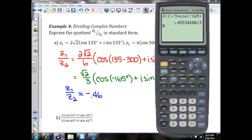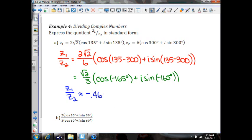And then square root of 2 divided by 3 times the sine of negative 165. Again, since it's in the third quadrant already, it's going to be negative here, so minus 0.12i. So there you have it.